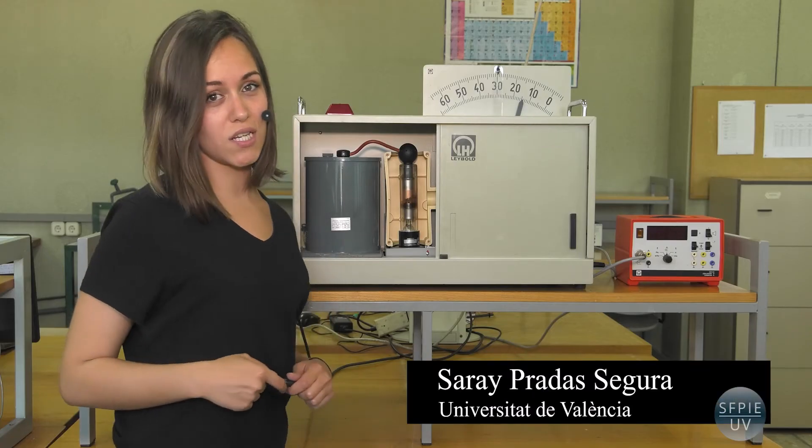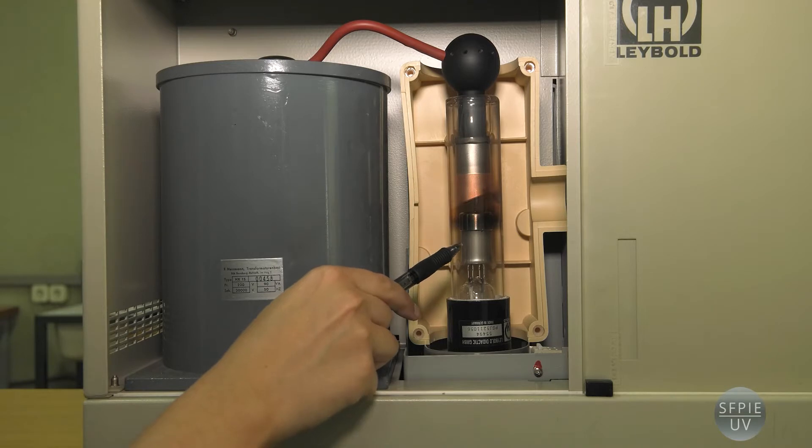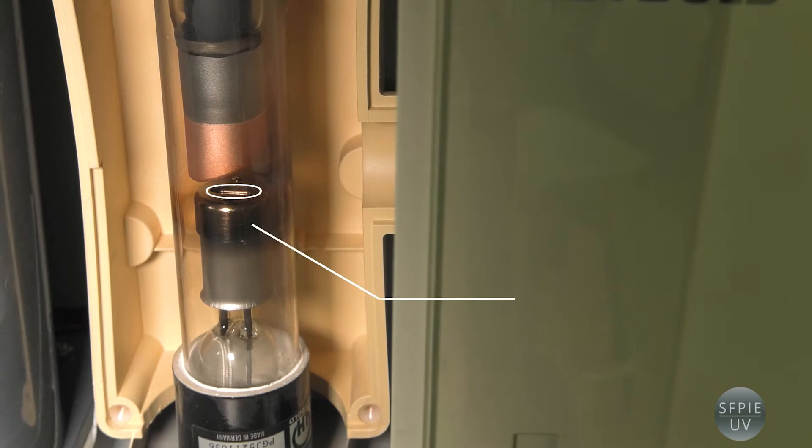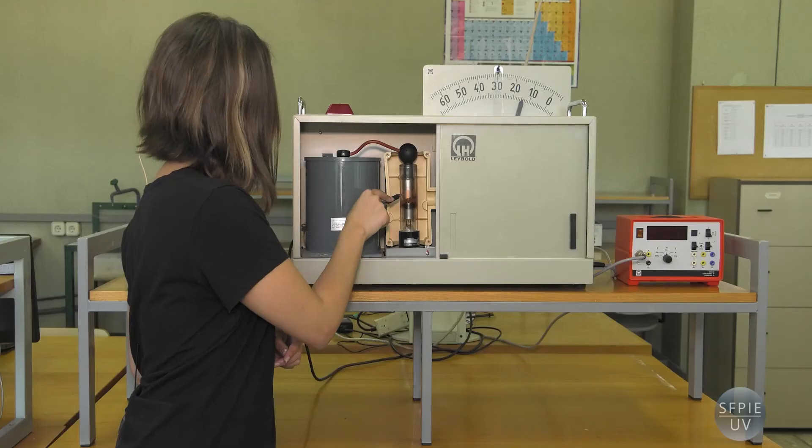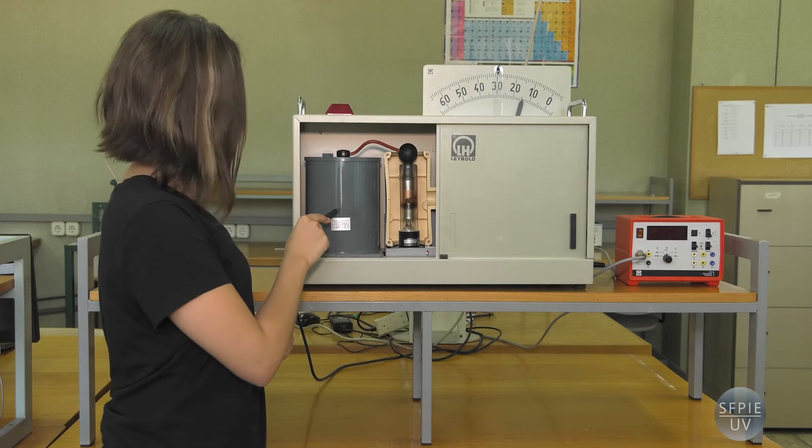Here we have an electron tube. It contains a cathode made of a thin wire filament, which is heated to release electrons. Those electrons going through this opening are accelerated to an anode of molybdenum by a voltage provided by this power source.